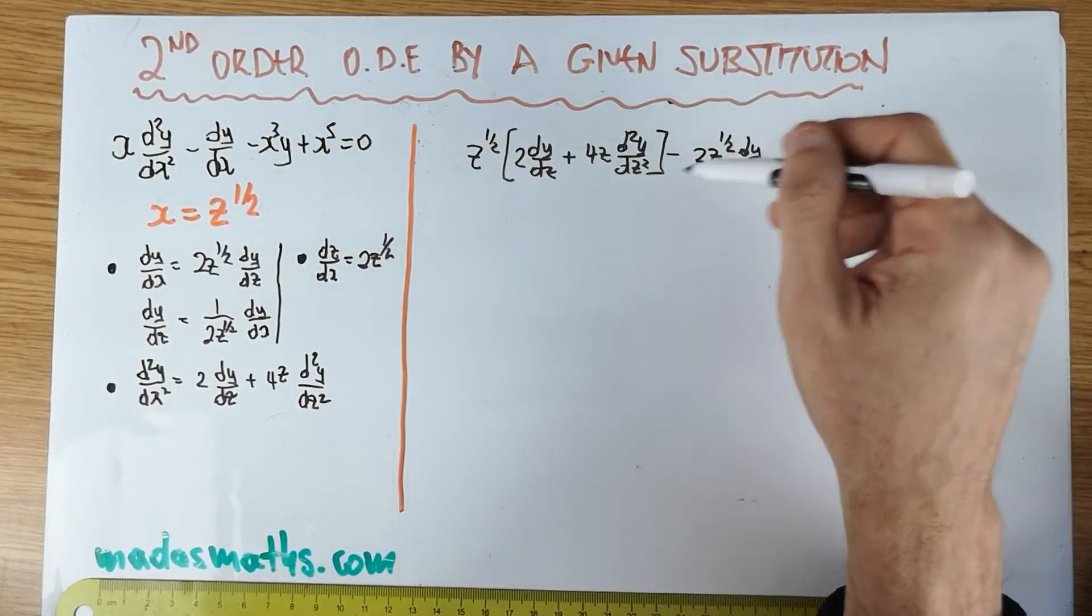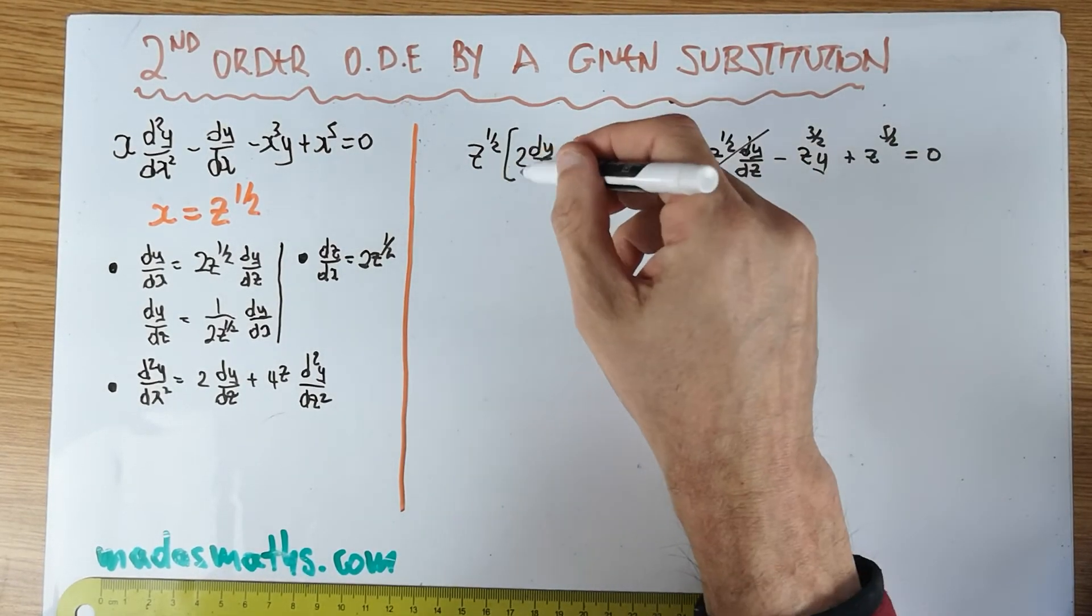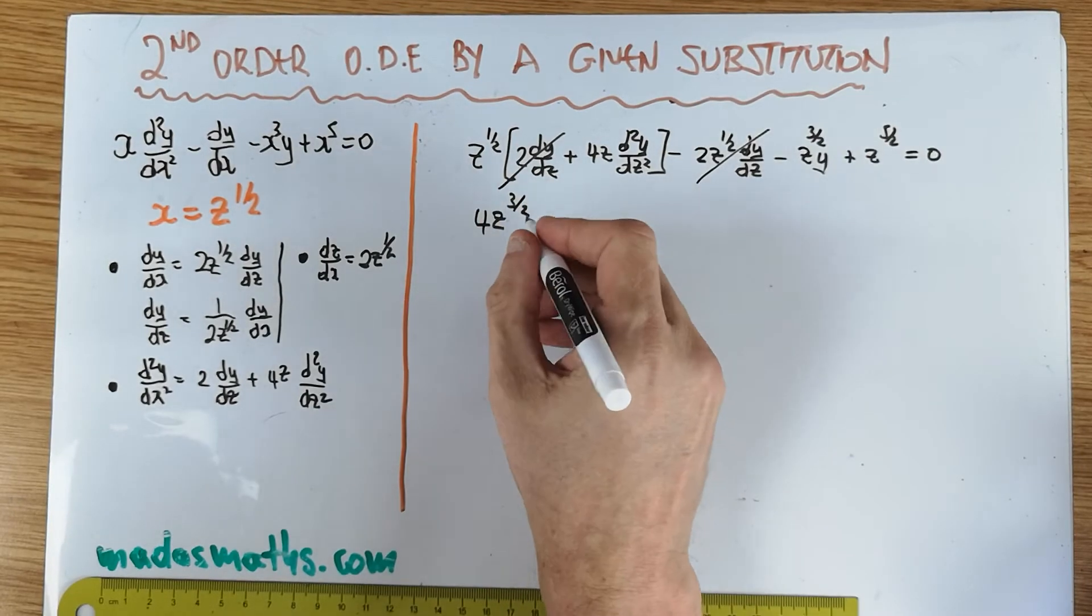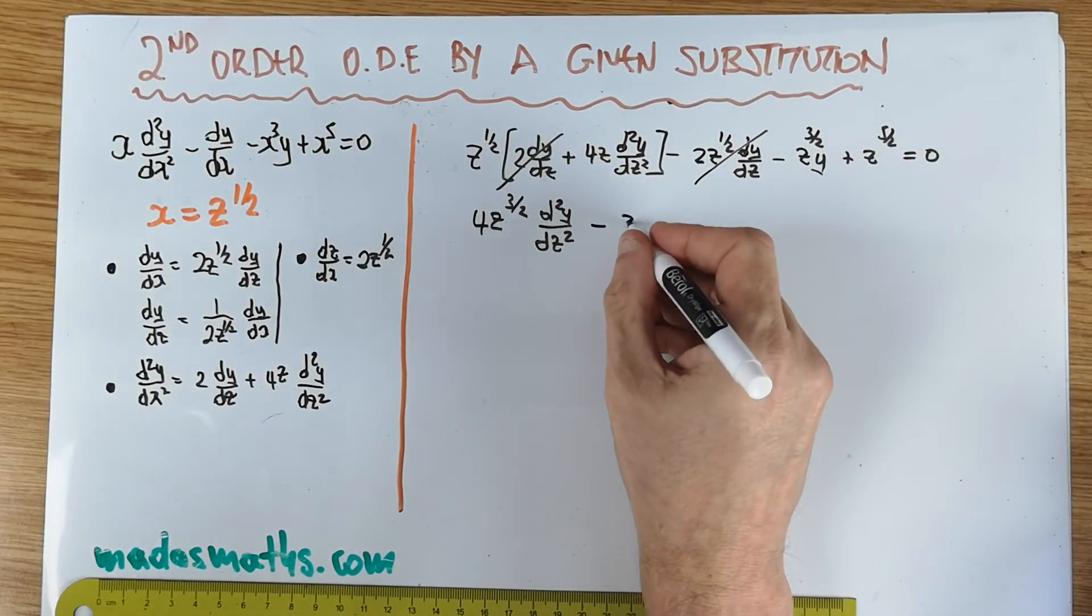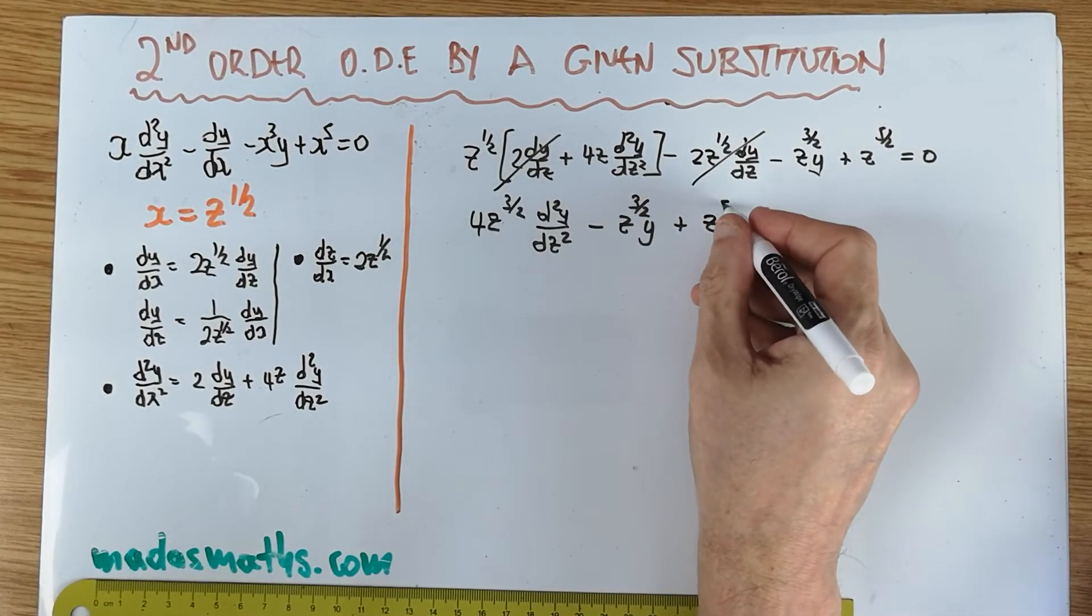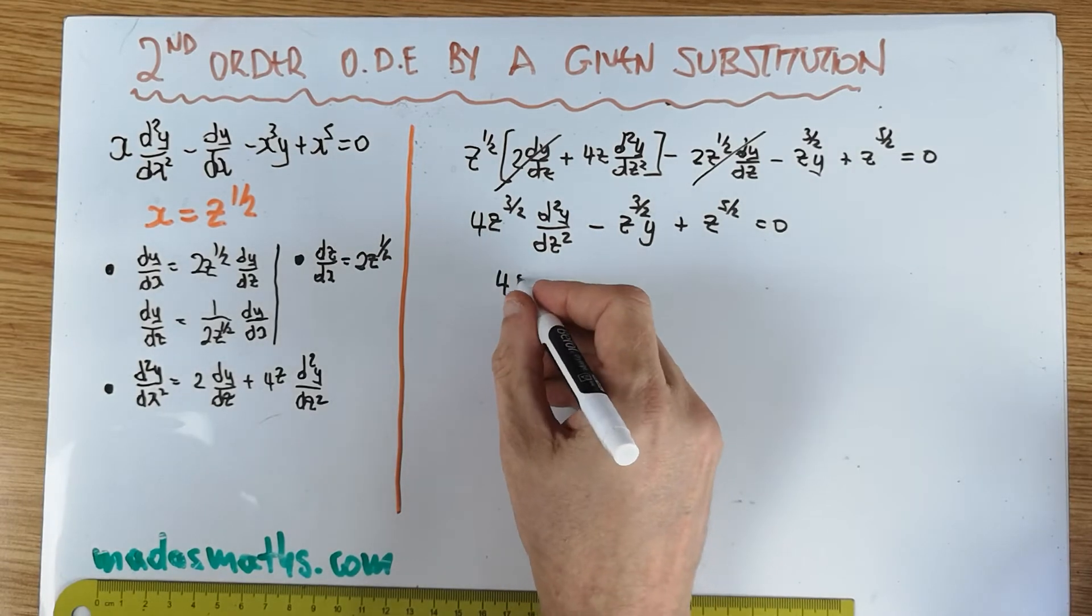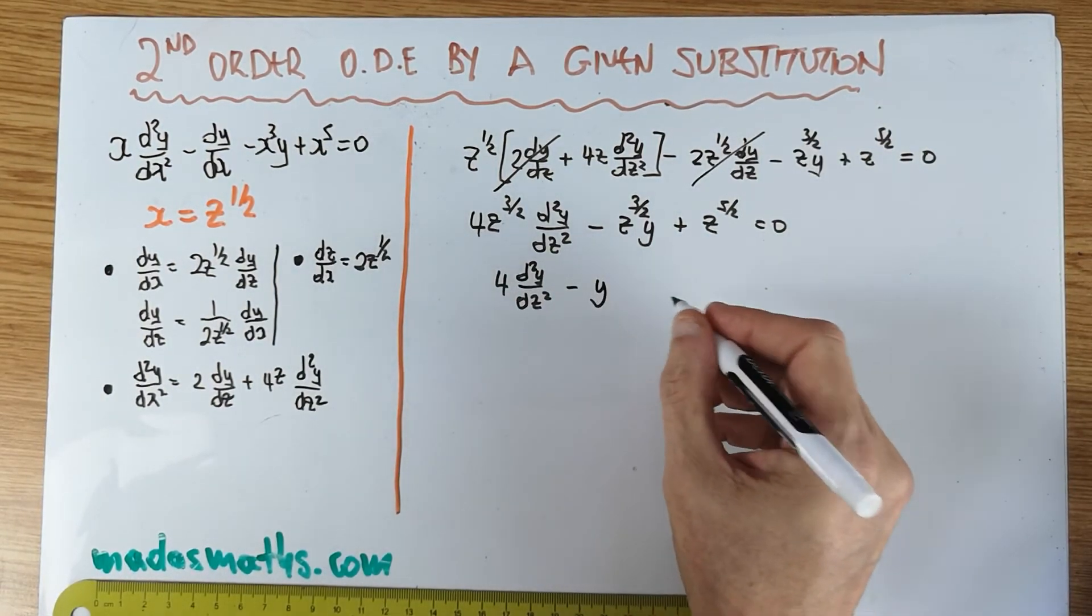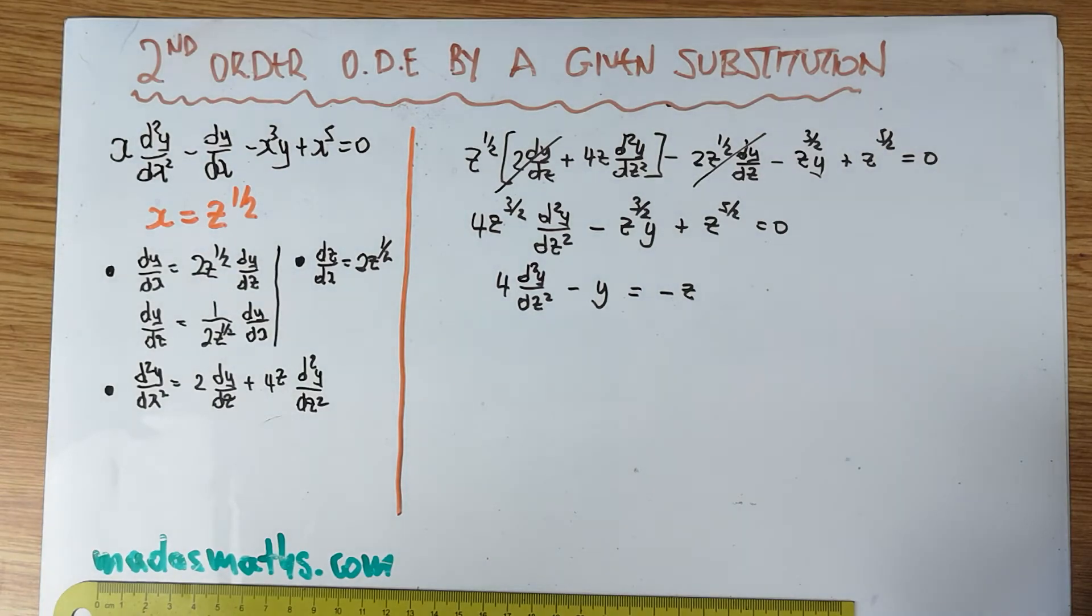Minus x cubed which is z to the 3 over 2 with a y plus z to the 5 over 2 is equal to 0. You should, let me please I mean I don't want to write another line. There's the dy by dx, two lots of z to the half minus two lots of z to the half, this will cancel. So all I've got is this multiplication here so 4z to the 3 over 2 second derivative of y with respect to z minus and this is good news because you can see I can cancel z to the 3 over 2 hopefully this will be good news in the grand scheme of things.